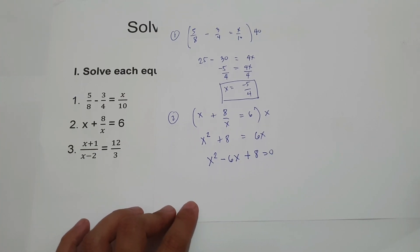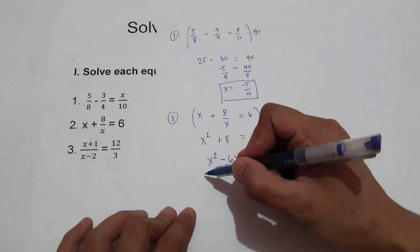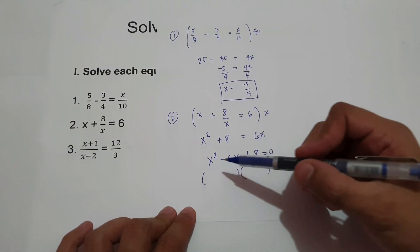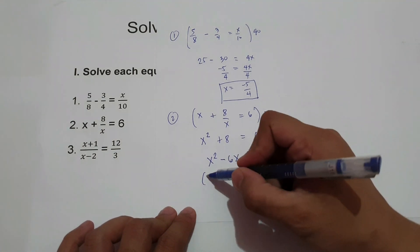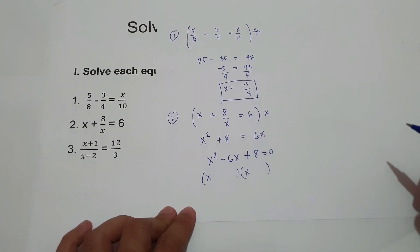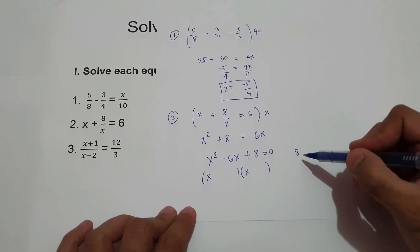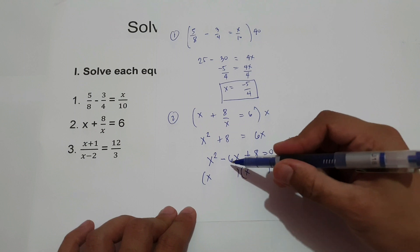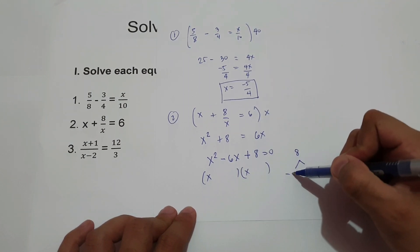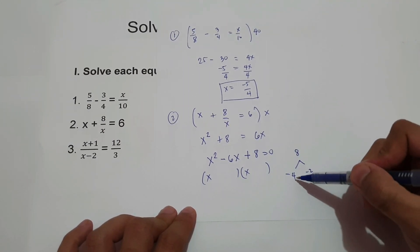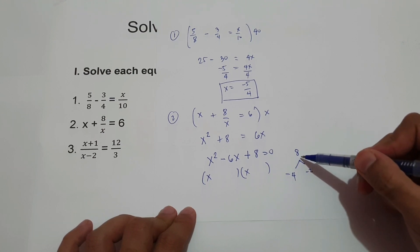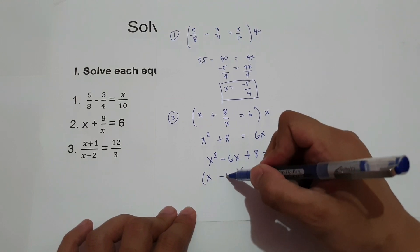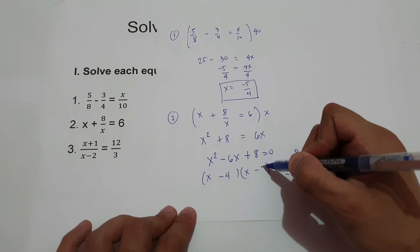That means we have two values of x. Let us factor x squared minus 6x plus 8. The factor of x squared is x and x. Now, what are the two numbers that we multiply to get 8, and when we add we get negative 6? That is negative 4 and negative 2. Negative 4 times negative 2 is positive 8, and negative 4 plus negative 2 is negative 6. So we have negative 4 and negative 2.